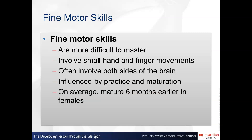Fine motor skills, by contrast, involve very small motor movements — things like finger movement, such as playing a piano. Fine motor skills are a little more difficult to master than gross motor skills like dance or sports. On average, fine motor skills actually develop about six months earlier in females than in males.